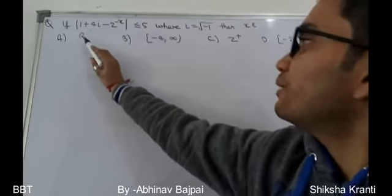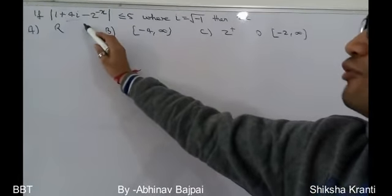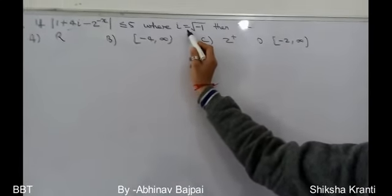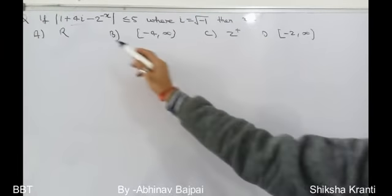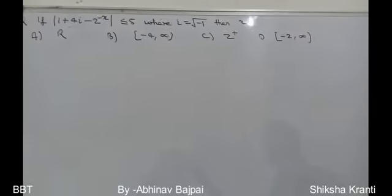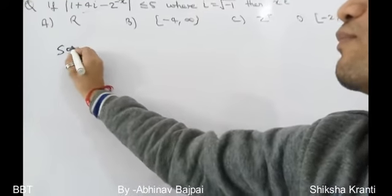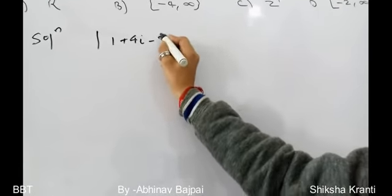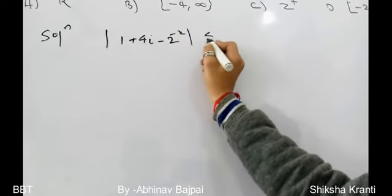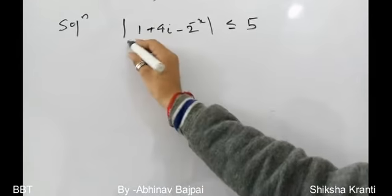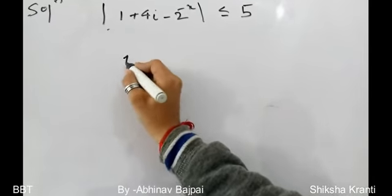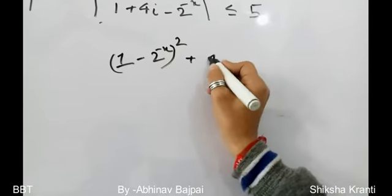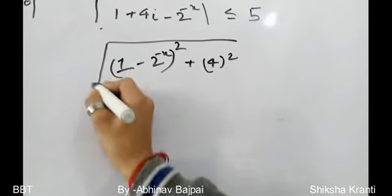This is another problem from complex numbers. If |1 + 4i - 2^(-x)| ≤ 5, where i = √(-1), find the interval to which x belongs. Using the formula for modulus, this becomes sqrt((1 - 2^(-x))² + 4²) ≤ 5.